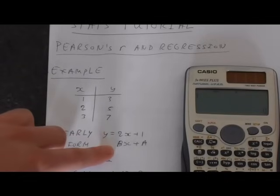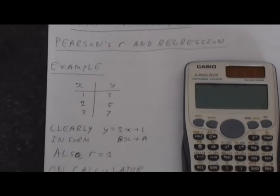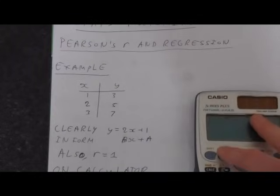Just bear in mind that this is in the form bx plus a. That's how the calculator understands this. The calculator tells us b is 2 and a is 1. Also, the correlation coefficient is obviously going to be equal to 1 because all of these points are going to be on the line. It's going to be perfectly correlated, and it's going to slope up the way, so that's why it's positive. Let's do this on the calculator.